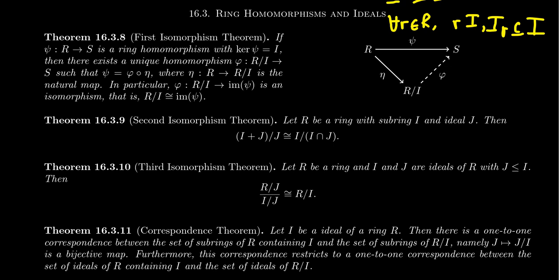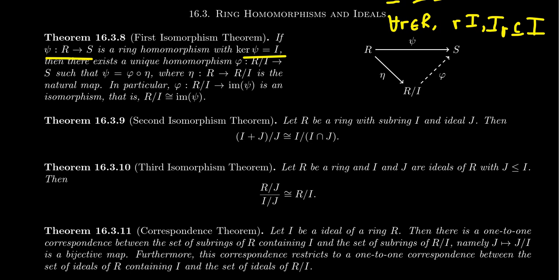In this video, I wanted to summarize the three isomorphism theorems for ring theory, and their proofs are by analogy to what we saw with group theory. The first isomorphism theorem, sometimes called the fundamental homomorphism theorem, says that if you have a ring homomorphism — we'll call it psi — as a map between two rings R and S, and suppose the kernel of psi is the ideal I. We've seen previously that the kernel of a ring homomorphism is exactly an ideal. Ideals and kernels are the same things.